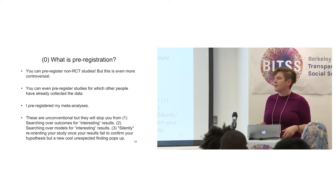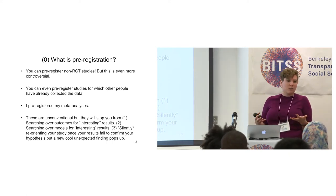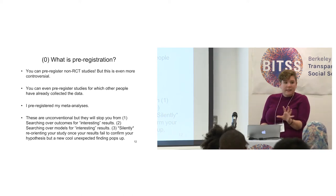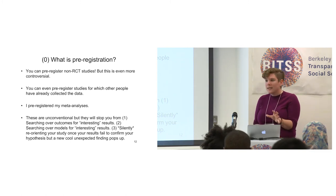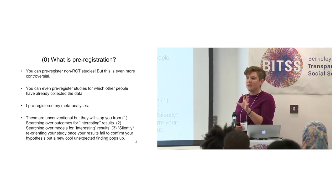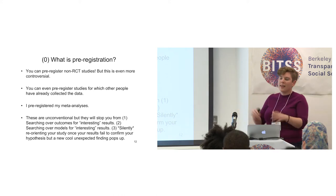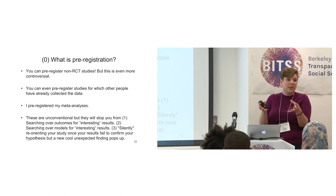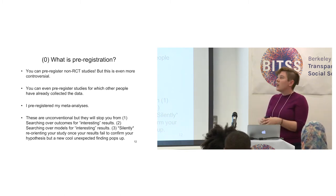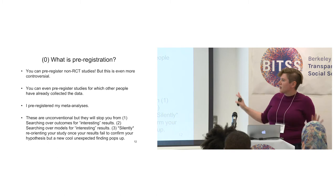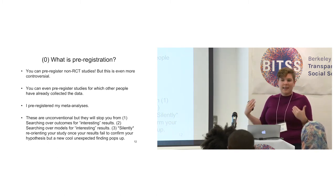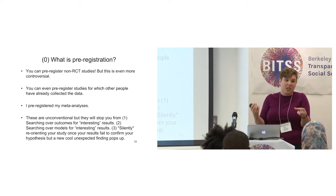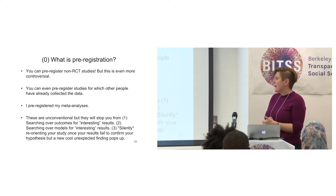P-hacking is most serious in a frequentist framework when you're trying to claim you're not doing things conditional on the data. In a Bayesian framework it's less serious because Bayesian statistics is always conditional on the data you have. However, there are subtle differences in the likelihood you should be using if your plan was 'if I don't infer that this beta is larger than this number, I'm going to do additional analyses.' The actual likelihood you should use in your Bayesian analysis is different, so Bayesians don't get off scot-free from p-hacking.